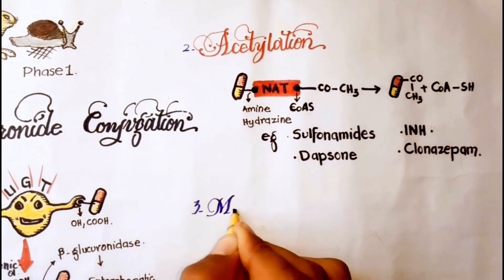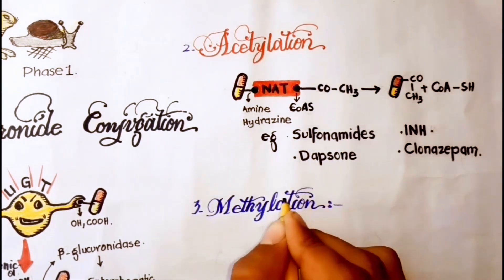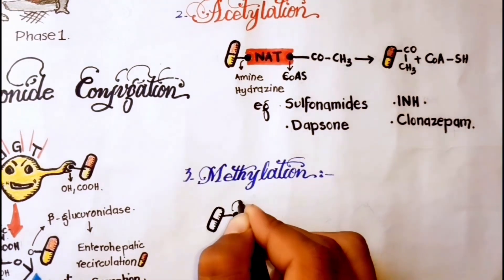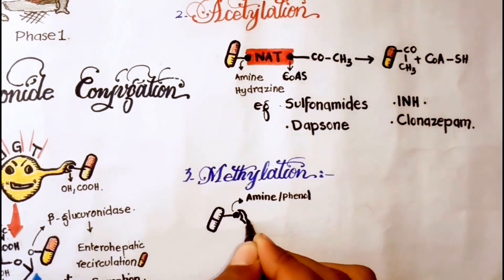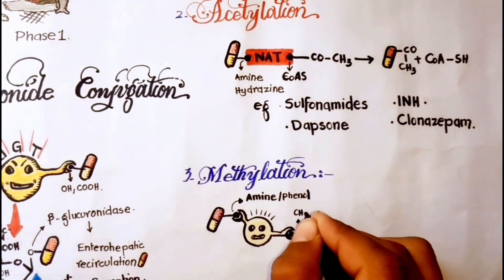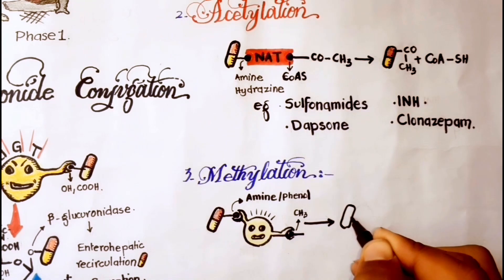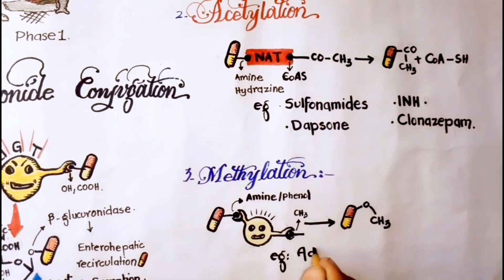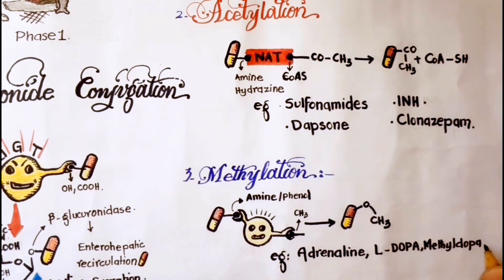Third is methylation. Drugs with amine or phenol group are methylated by methyltransferases. For example, adrenaline, L-dopa, methyldopa, and captopril.